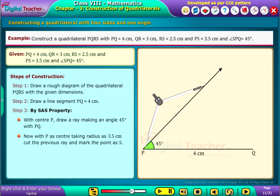Now, with P as center taking radius as 3.5 cm, cut the previous ray and mark the point as S.